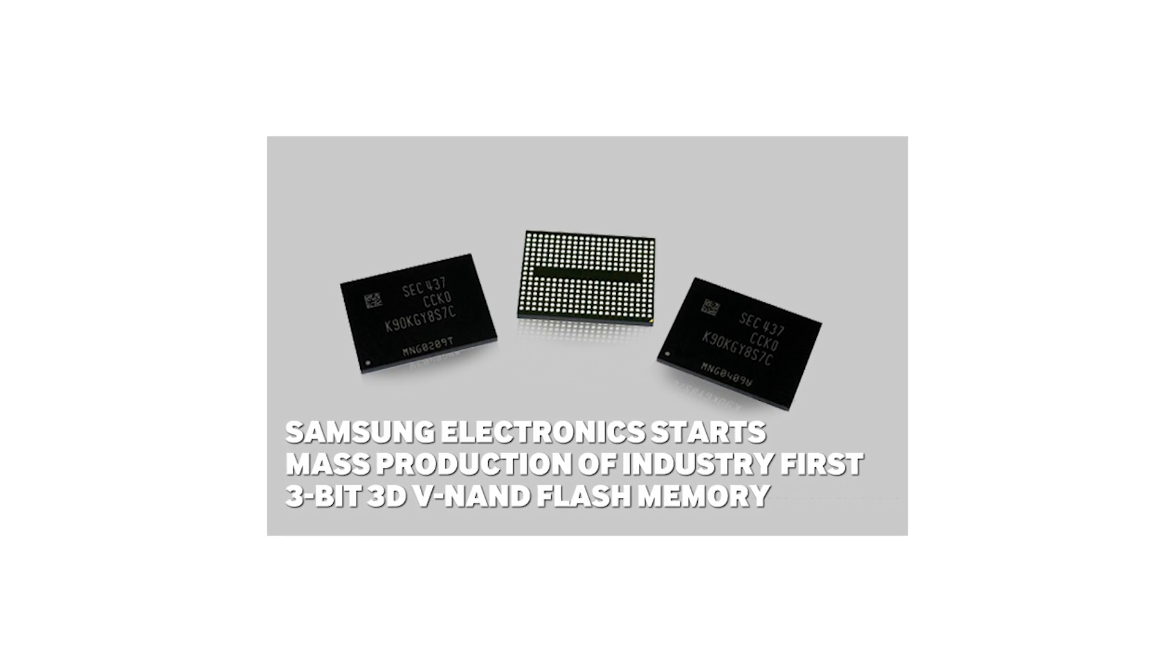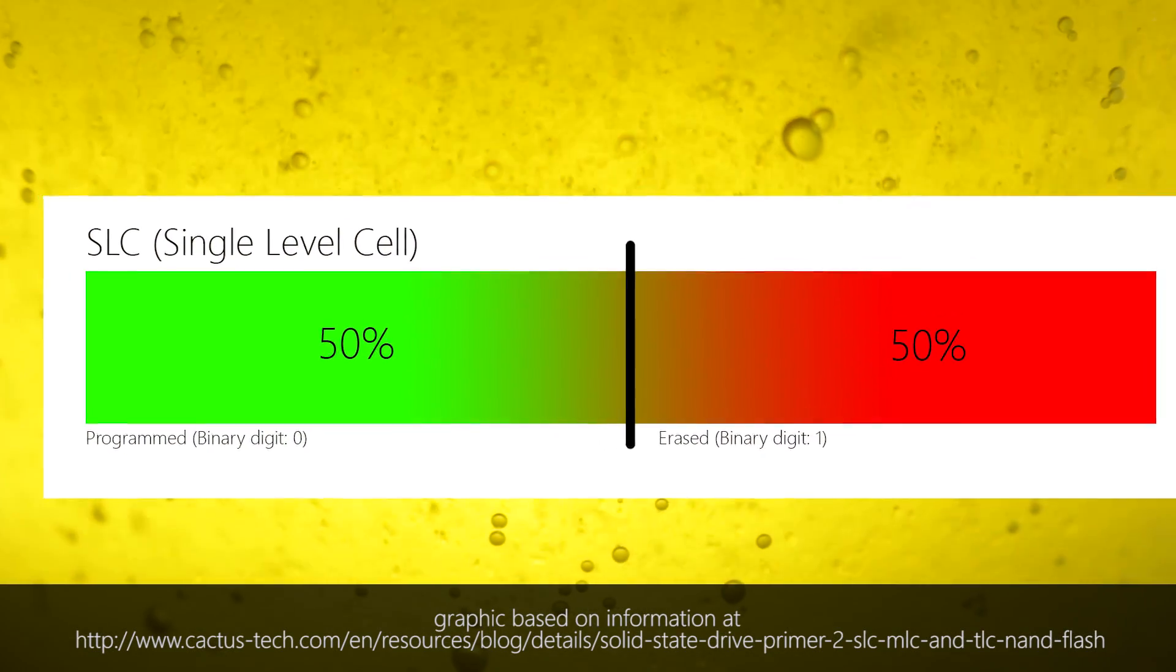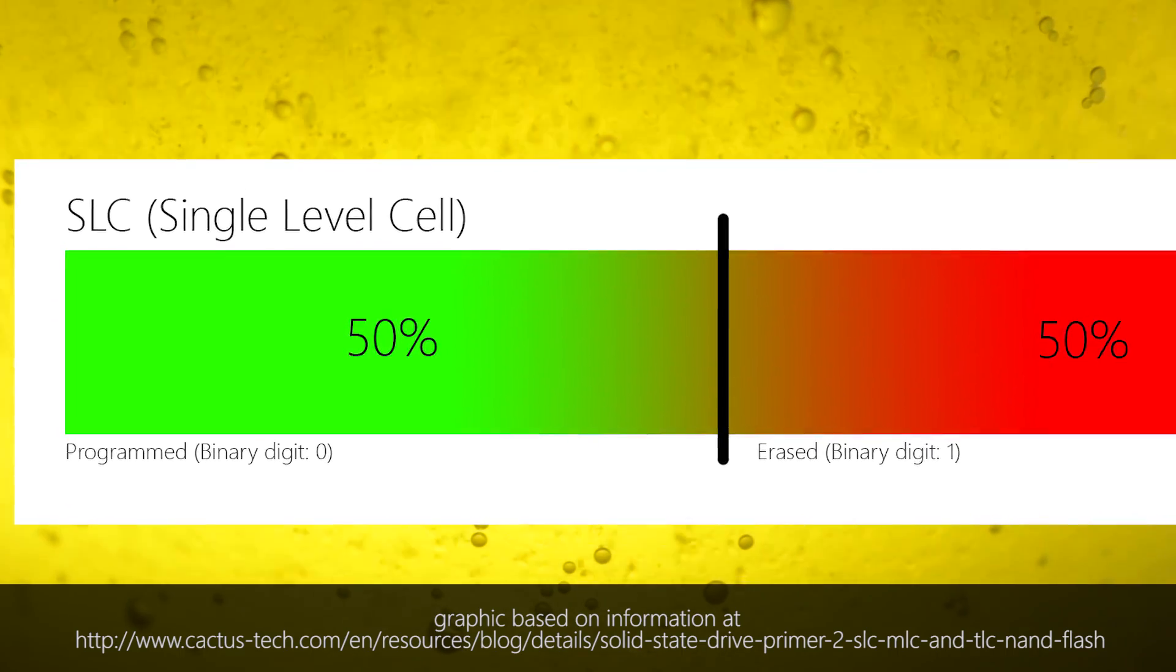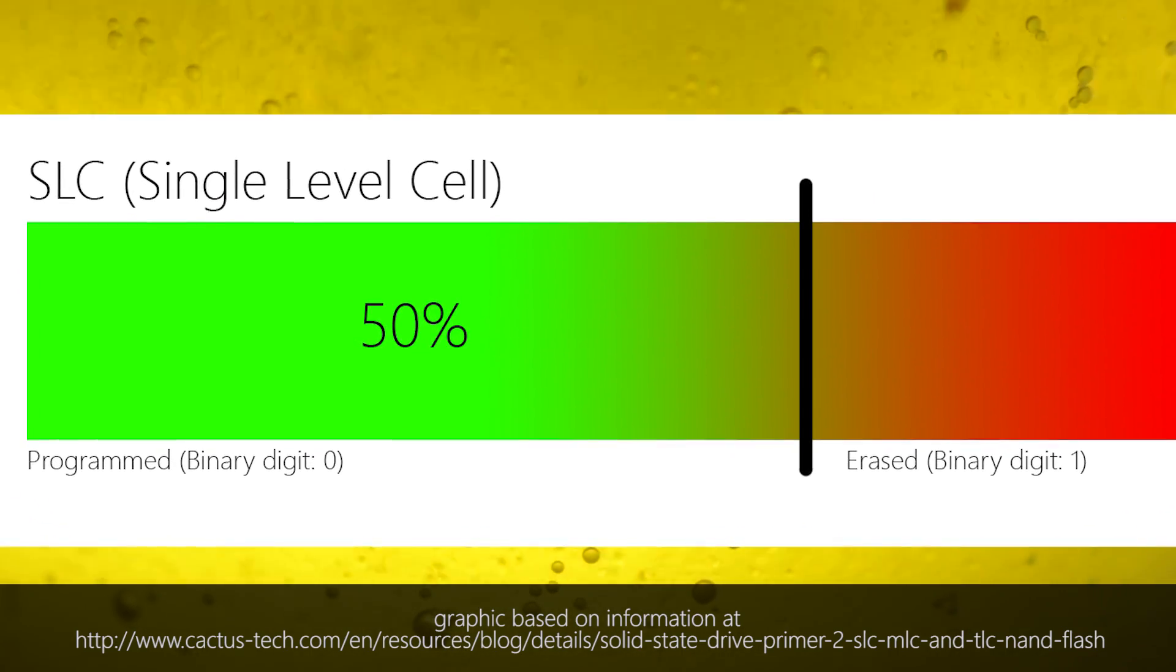And this is the single biggest reason why MLC flash is less reliable than SLC. You see, in a single level cell system, a single bit is stored in each cell. So that means that each distinct voltage stored in the floating gate occupies 50% of the maximum range.